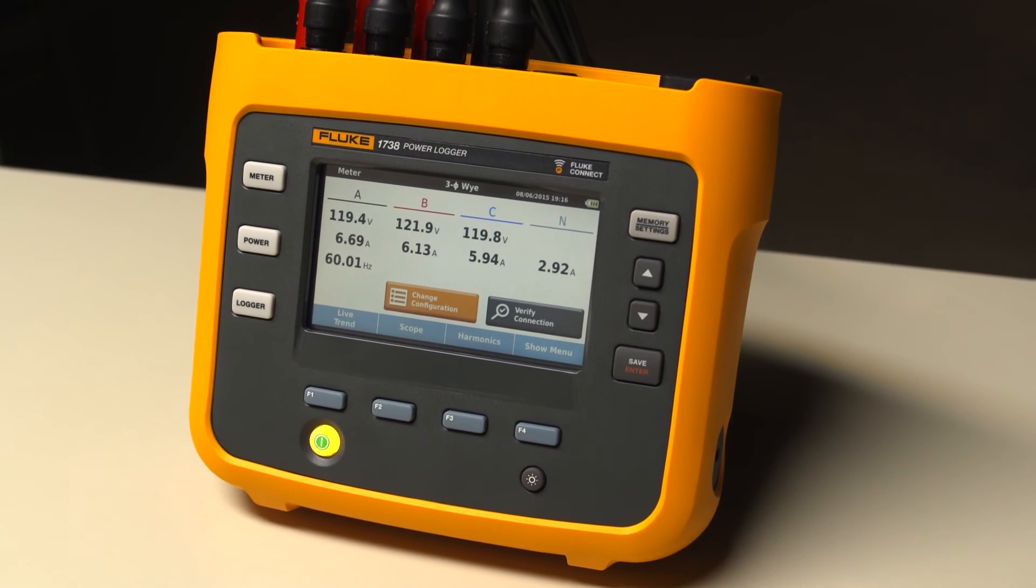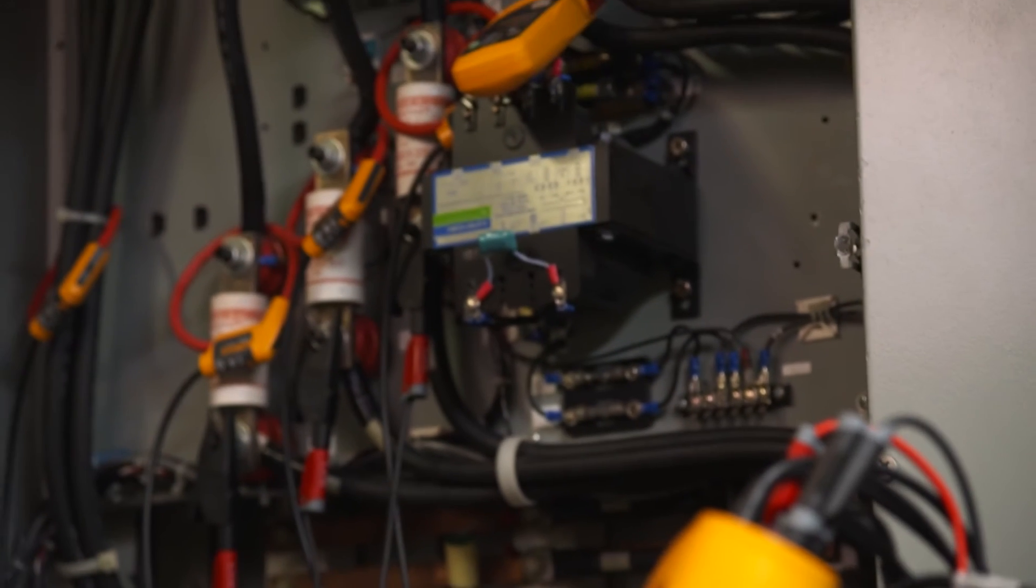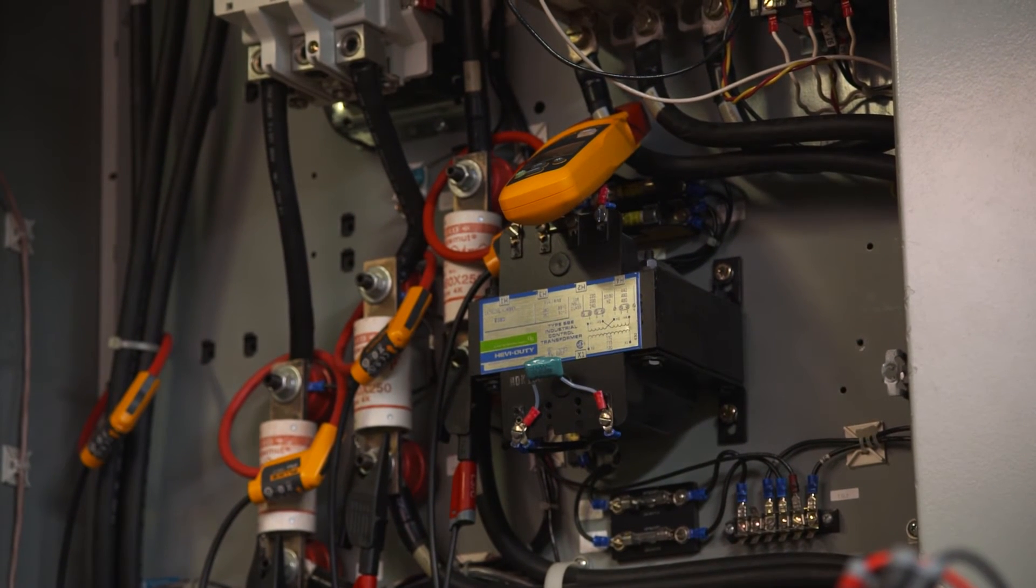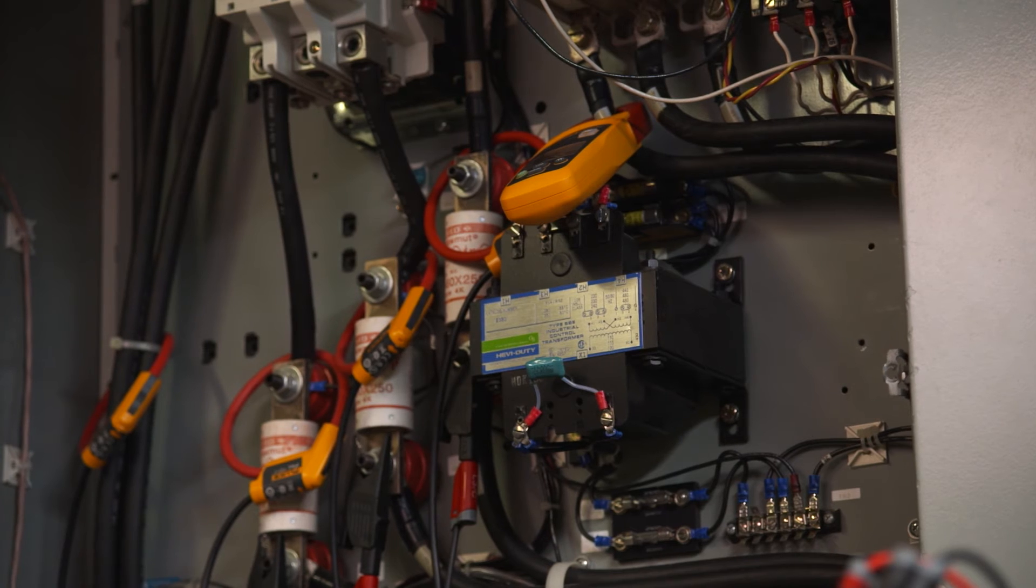And with the 1738, you can now use other Fluke Connect enabled tools, such as the Fluke A3000 FC wireless AC current clamp module, to log additional measurements alongside your Fluke 1738.